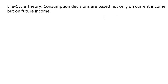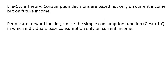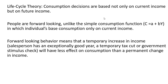Consumption decisions are based not only on current income, but on future income. People are forward-looking, unlike the simple consumption function, in which individuals base consumption only on current income. Forward-looking behavior means that a temporary increase in income — for example, a salesperson has an exceptionally good year, or a person receives a temporary tax cut or a government stimulus check — will have less effect on consumption than a permanent change in income.